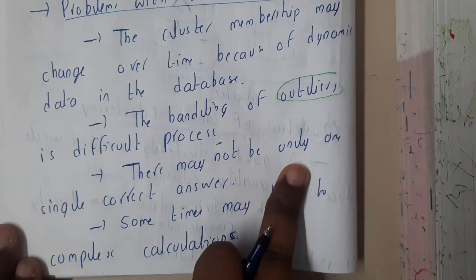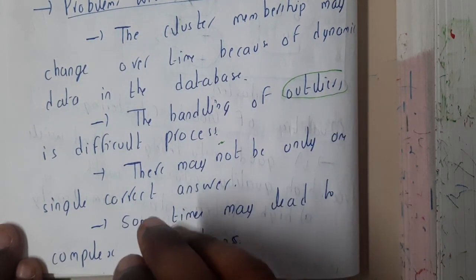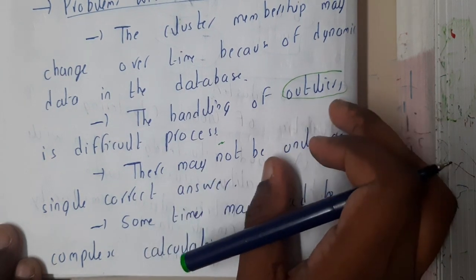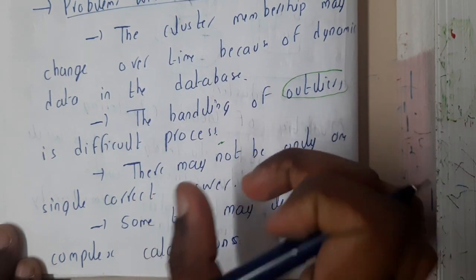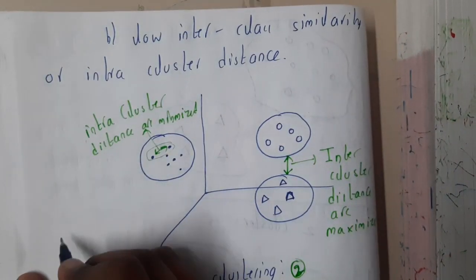Similarly, there may not be only one single correct answer. Basically in clustering we cannot say which cluster is the best among two. If there are two different clusterings of same size, then the count of the clusters are the same. Let us take an example.